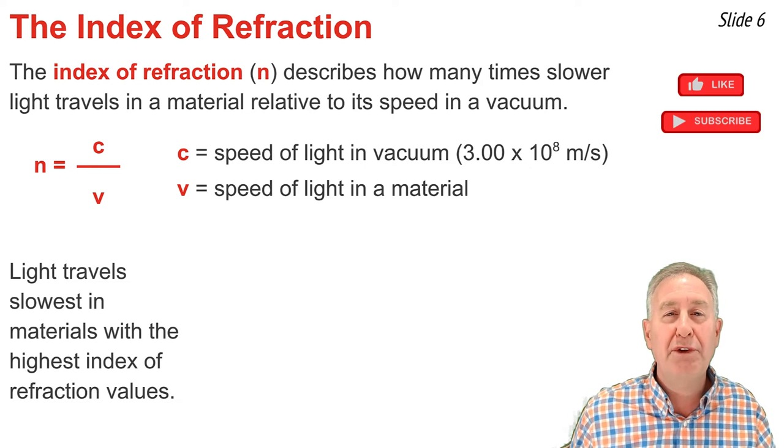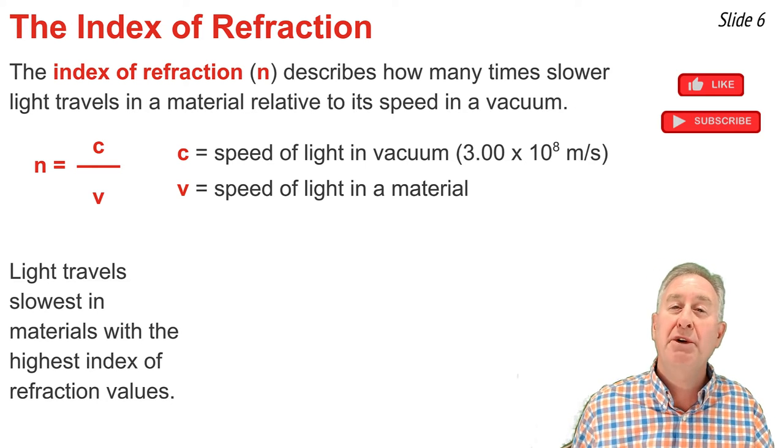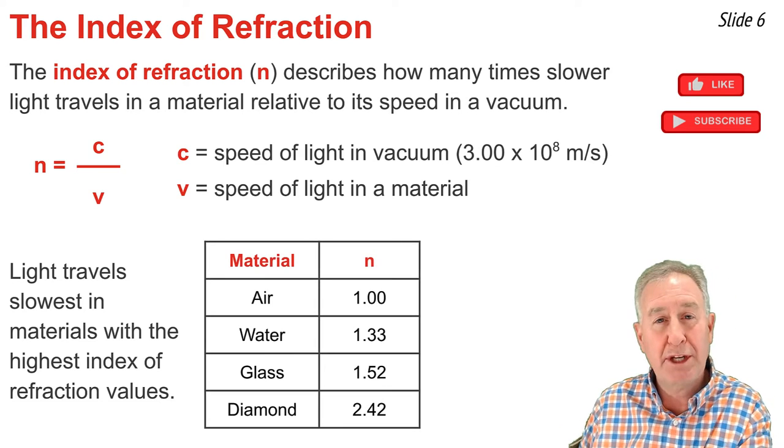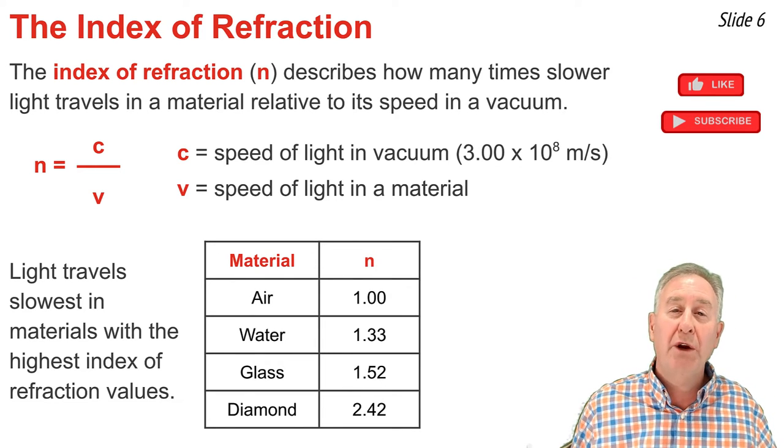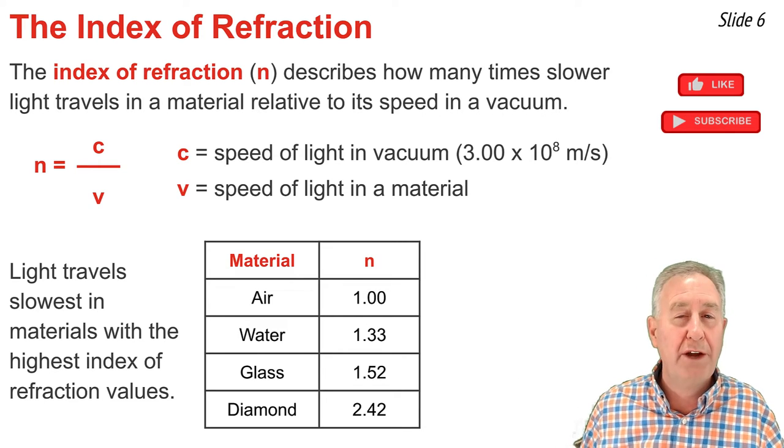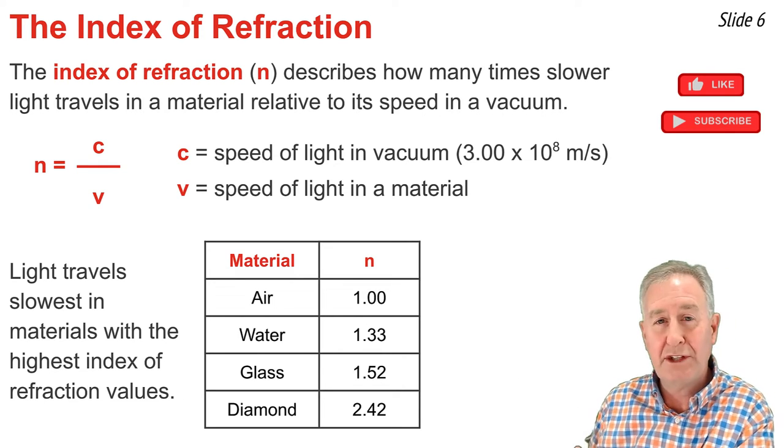The rule is that light will travel slowest in materials that have the greatest index of refraction value. Here are the four same materials we discussed earlier—air, water, glass, and diamond—and their index of refraction values, rounded to the second decimal place.